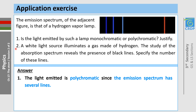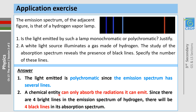Second question: a white light source illuminates a gas made of hydrogen. The study of the absorption spectrum reveals the presence of black lines — specify the number of these lines. We have seen that a chemical entity can only absorb the radiations it can emit. Since there are four bright lines in the emission spectrum of hydrogen, there will be four black lines in its absorption spectrum.